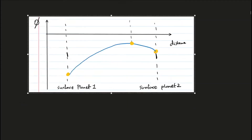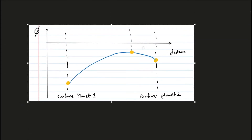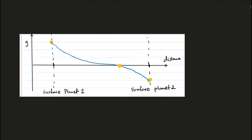This graph shows the relationship between gravitational potential and distance from one of the planets, showing how the overall value of gravitational potential varies between two planets. The first thing to notice is that the value always remains below the x-axis, so all values are negative. There is a point where the gradient of the graph becomes equal to zero, and where the gradient becomes zero you should remember that the strength of the gravitational field also becomes zero. So the gradient of this graph is related to the value of the gravitational field strength.